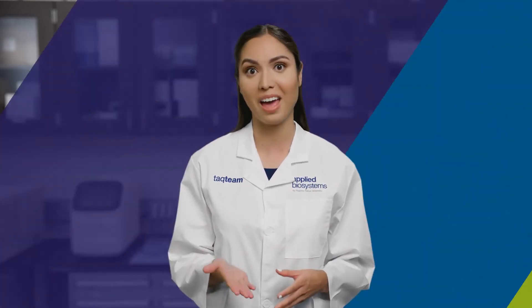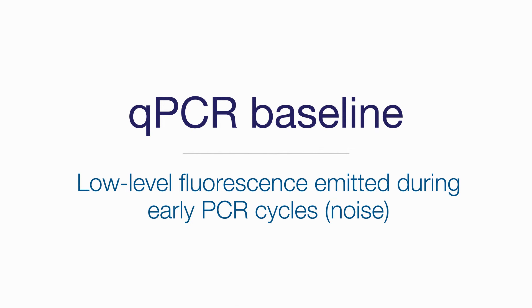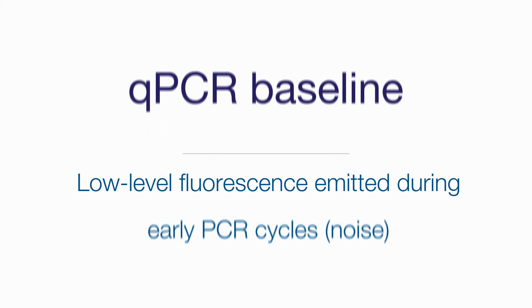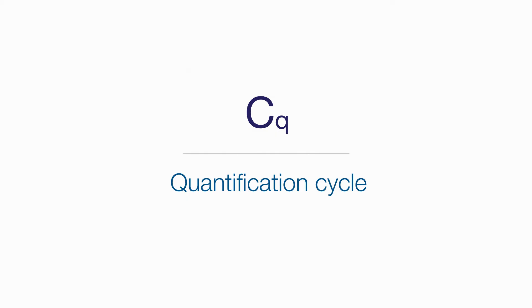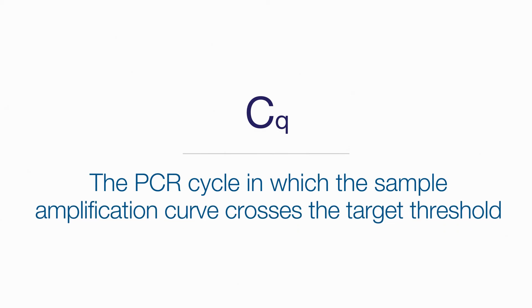We should also talk about Rn and CQ, or CT values. But we need to define baselines and thresholds first. A Q-PCR baseline is the low-level fluorescence emitted during early PCR cycles — it represents the background signal, or noise. The target threshold, which appears as a horizontal line in the amplification plot, is the signal intensity that reflects a statistically significant increase over the baseline. The threshold is then used to determine the CQ, or quantification cycle. The CQ value corresponds to the PCR cycle in which the sample amplification curve crosses the target threshold, where the fluorescent signal exceeds background fluorescence, indicating true amplification.